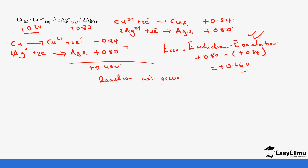Notice that for this equation, both standard electrode potentials were positive. It is very important to be careful in this case: the one that is most positive undergoes reduction, and the one that is less positive undergoes oxidation.